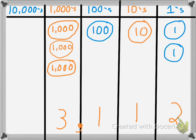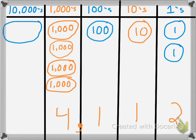Let's see what happens. What I'm going to do is add a 1,000 number disk to make the number a thousand greater. That changes it from 3,000 to a value of 4,000, which changes my number to 4,112. Now I'm going to increase it by 10,000, which changes it from 4,112 to 14,112.